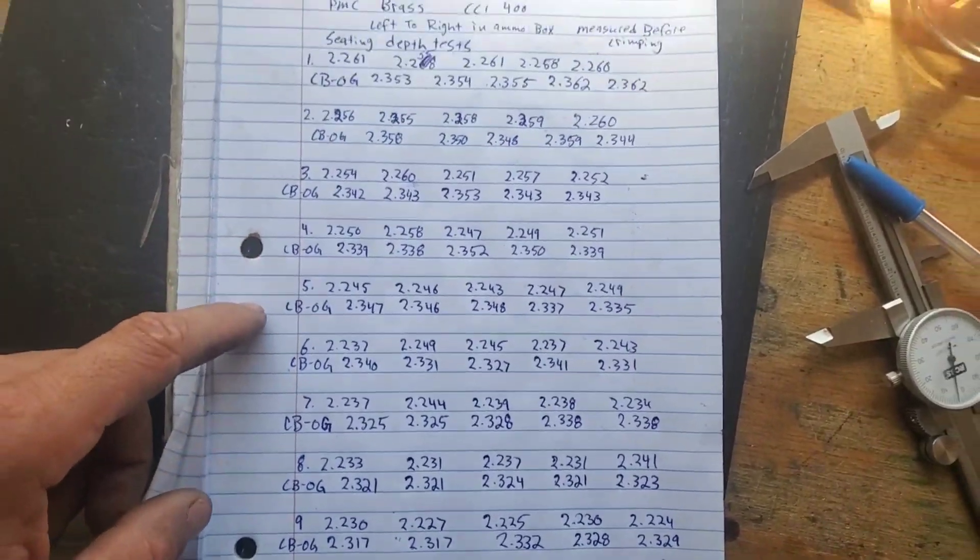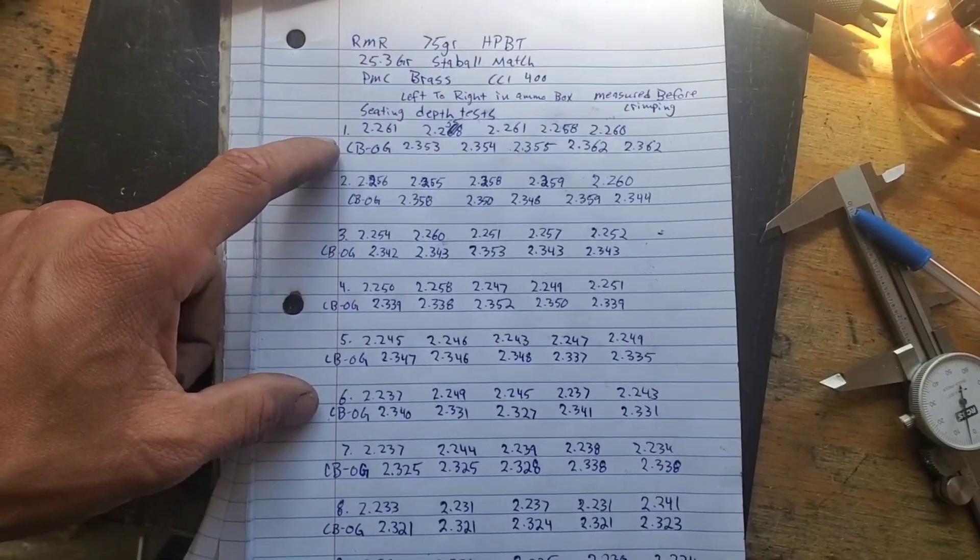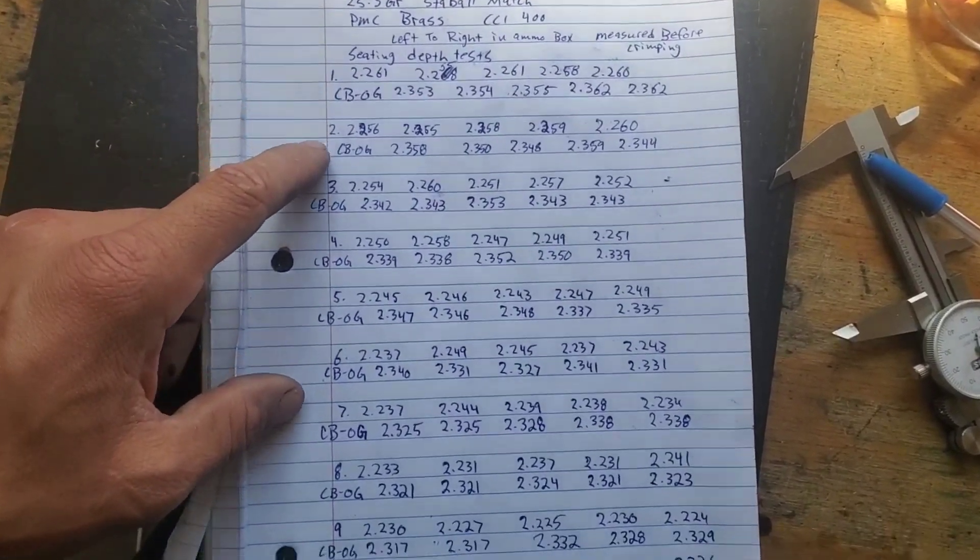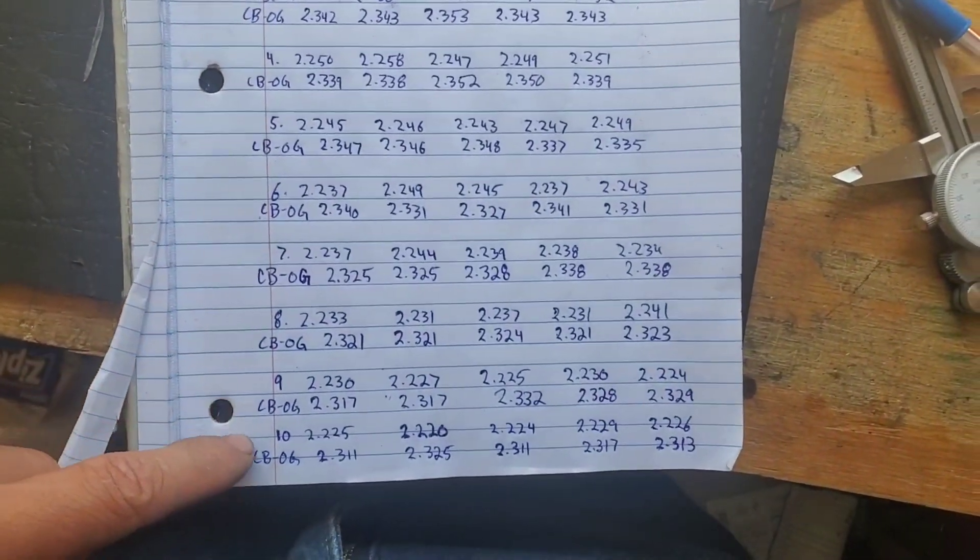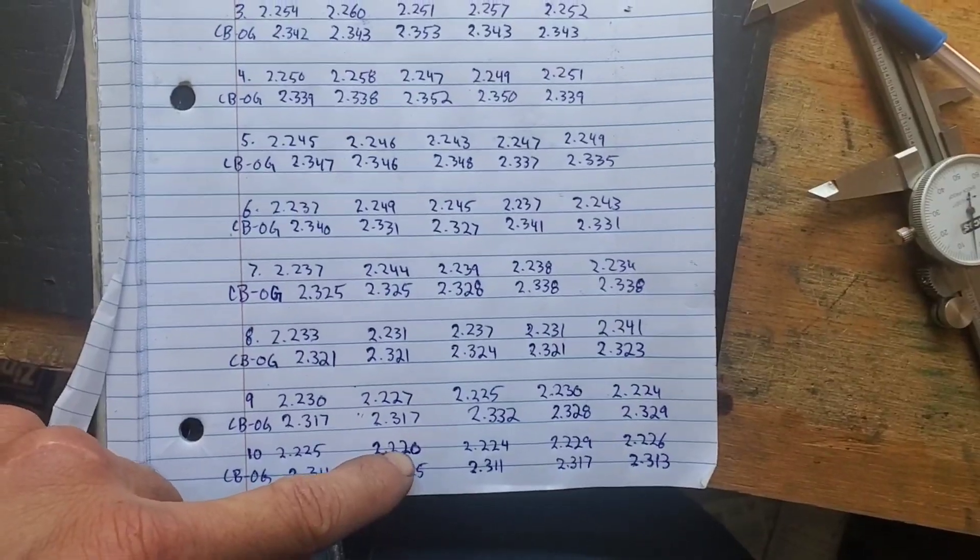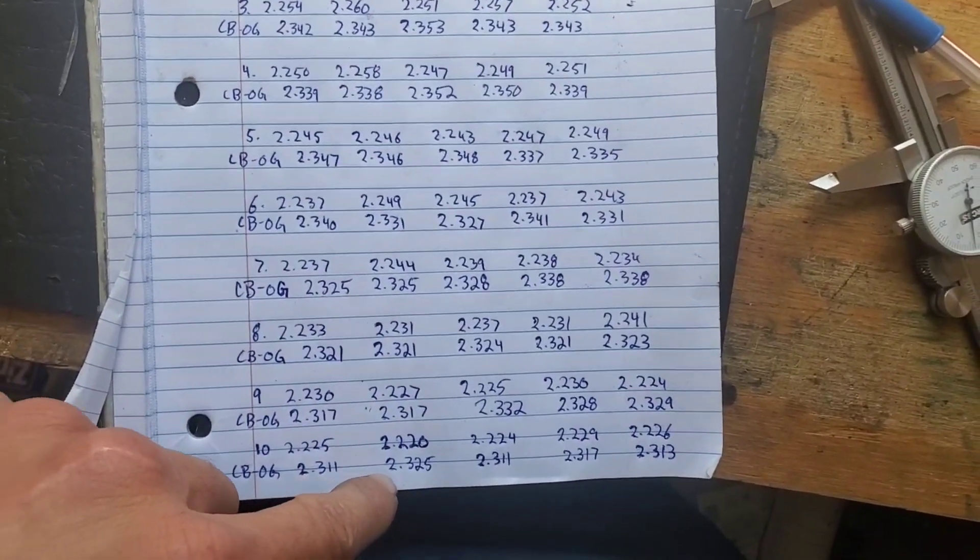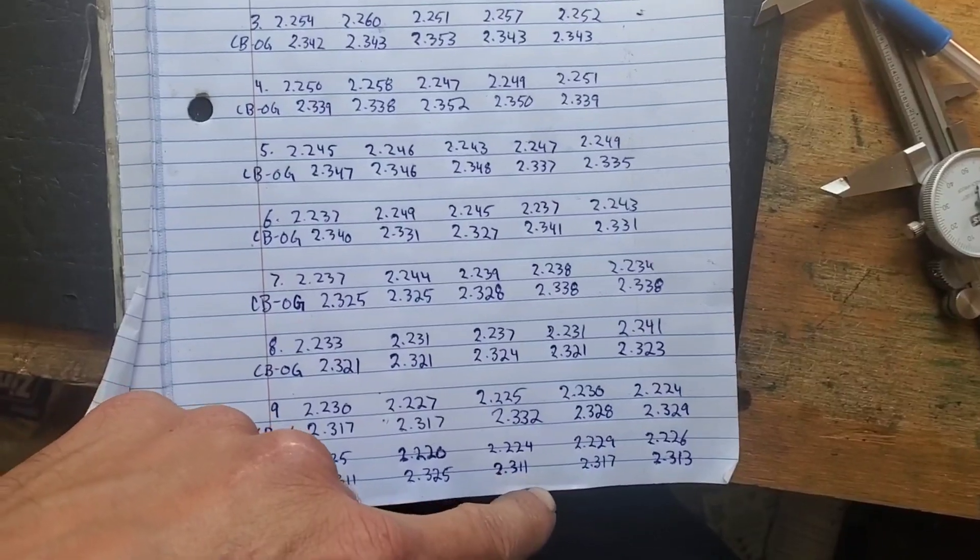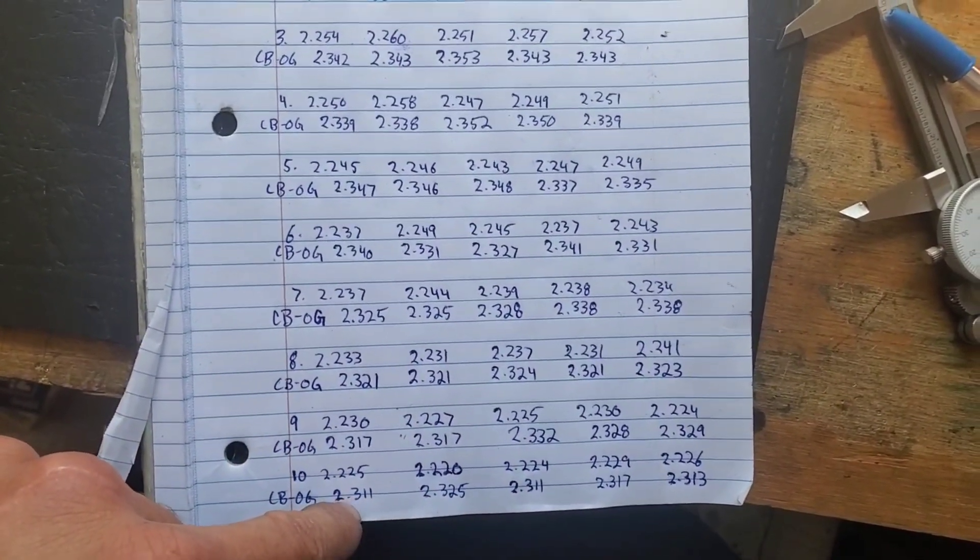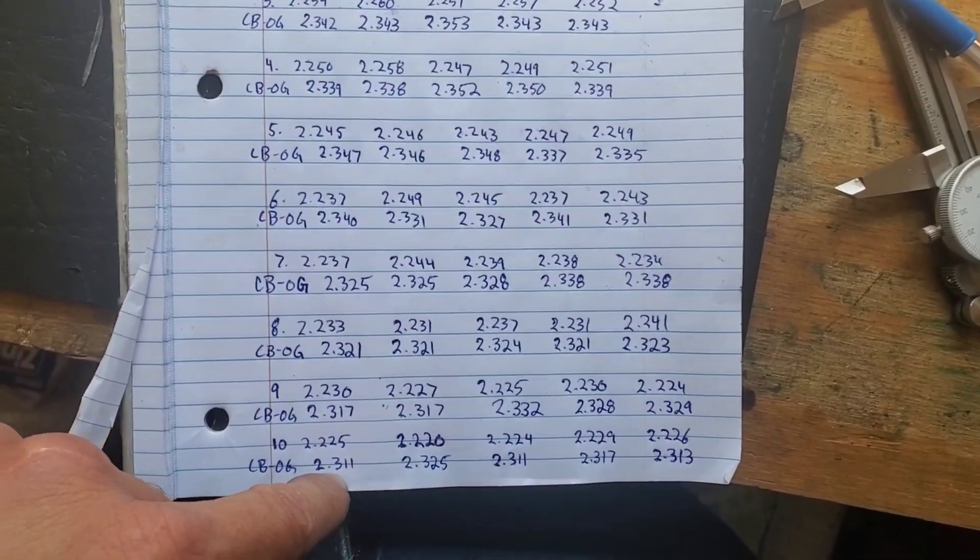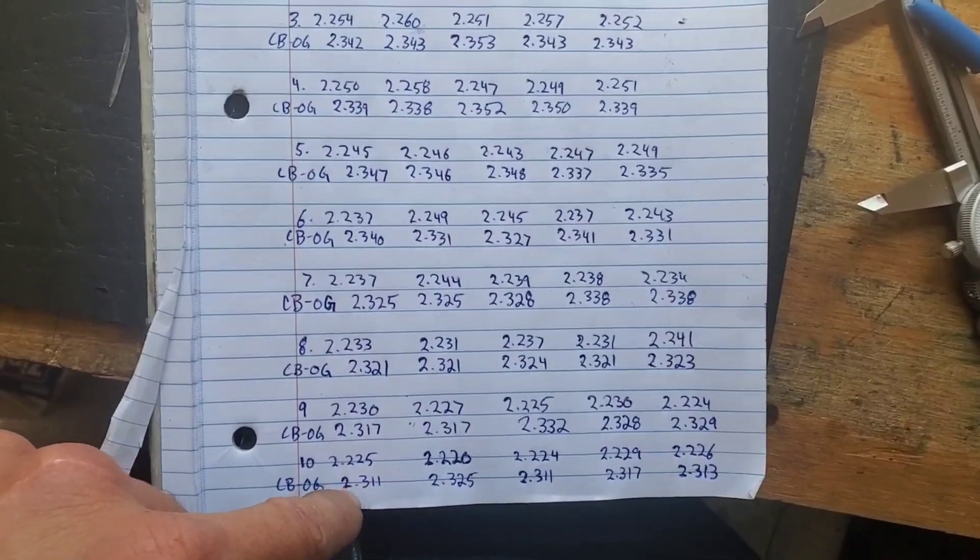So I've gone seating depth all the way from magazine length and all the way down to 2.220. So my cartridge-based ogive, although very, very inconsistent, we're looking at like 80 thousandths of jump to the lands here, maybe even more.